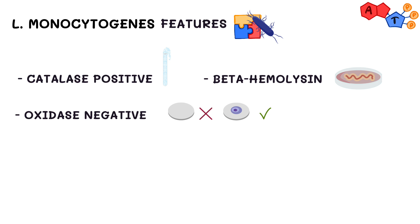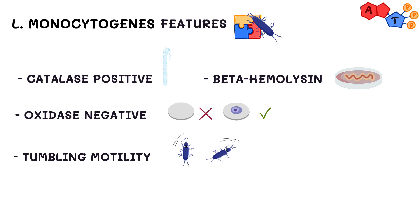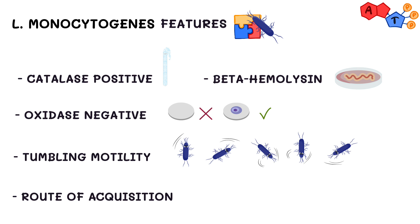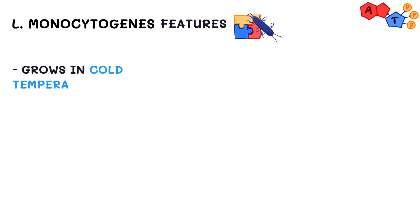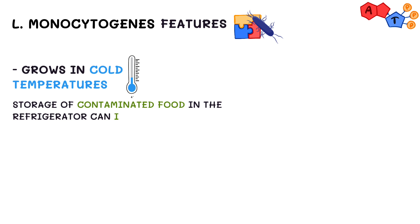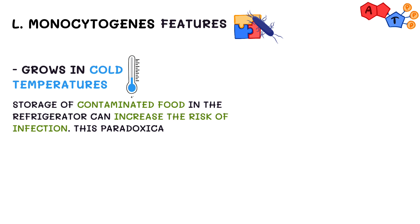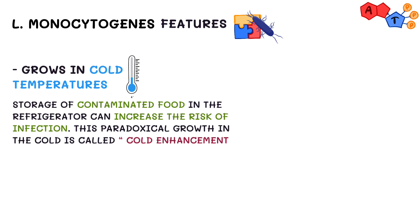It exhibits a characteristic tumbling motility when viewed with light microscopy. Listeria is acquired by ingestion of unpasteurized dairy products and cold deli meats, so it's primarily a foodborne disease. Interestingly, Listeria grows very well at cold temperatures, so storage of contaminated food in the refrigerator can increase the risk of infection. This paradoxical growth in the cold is called cold enhancement.